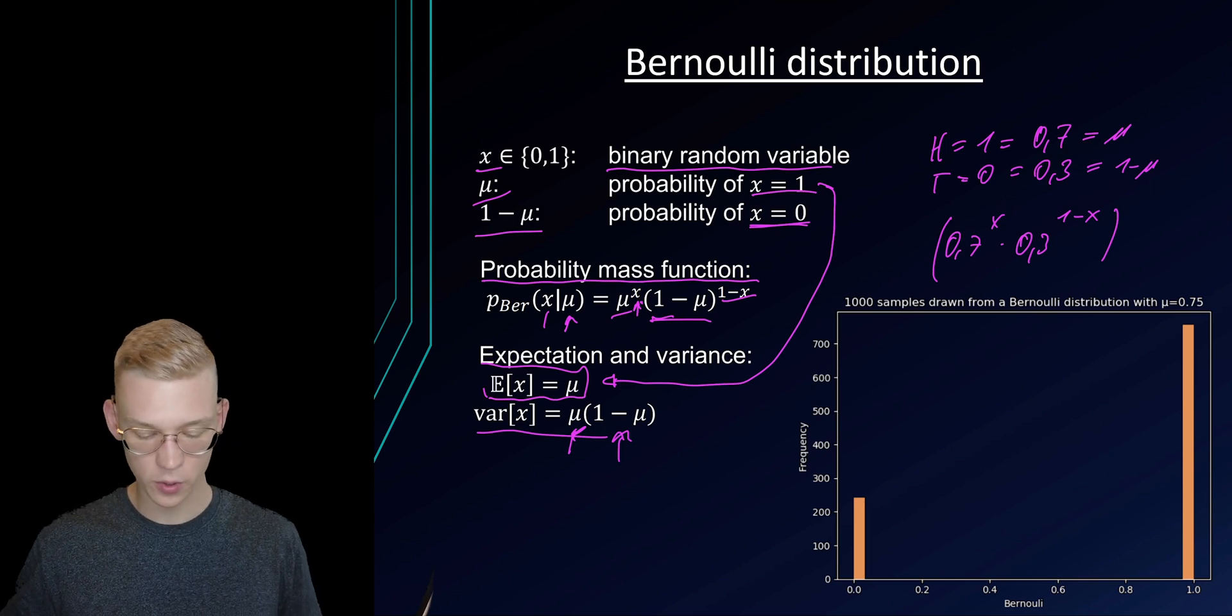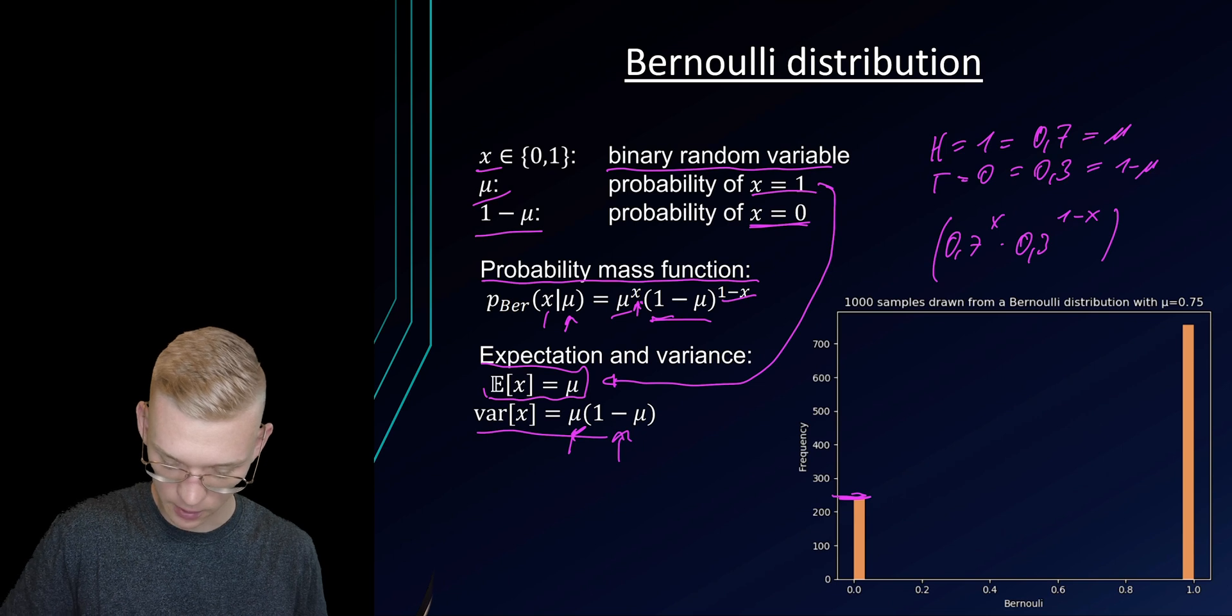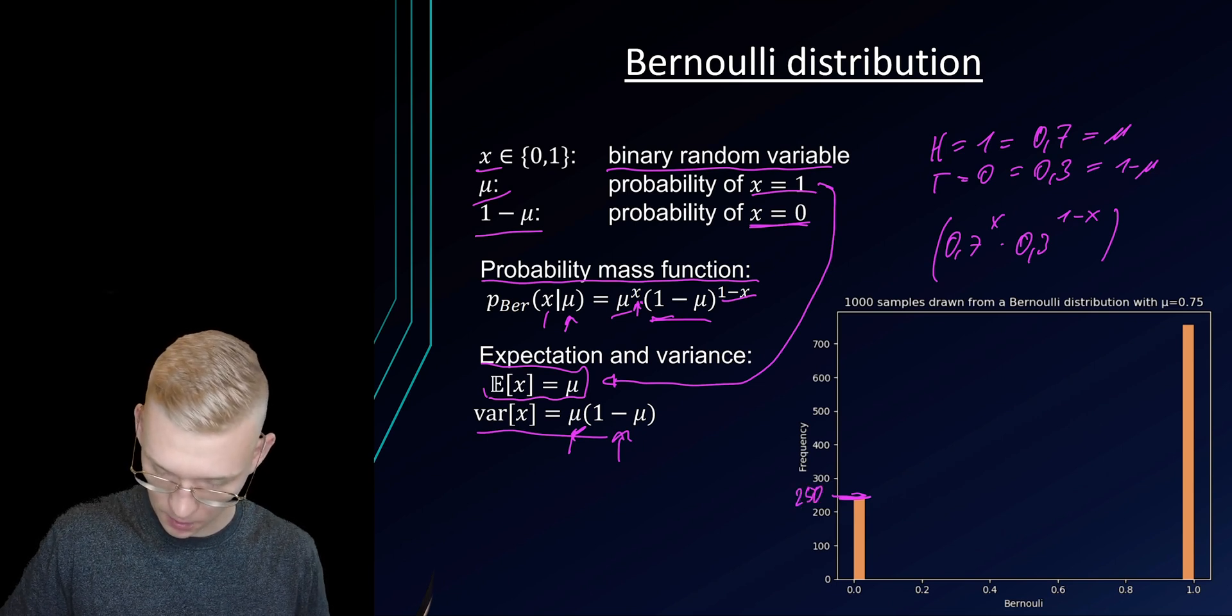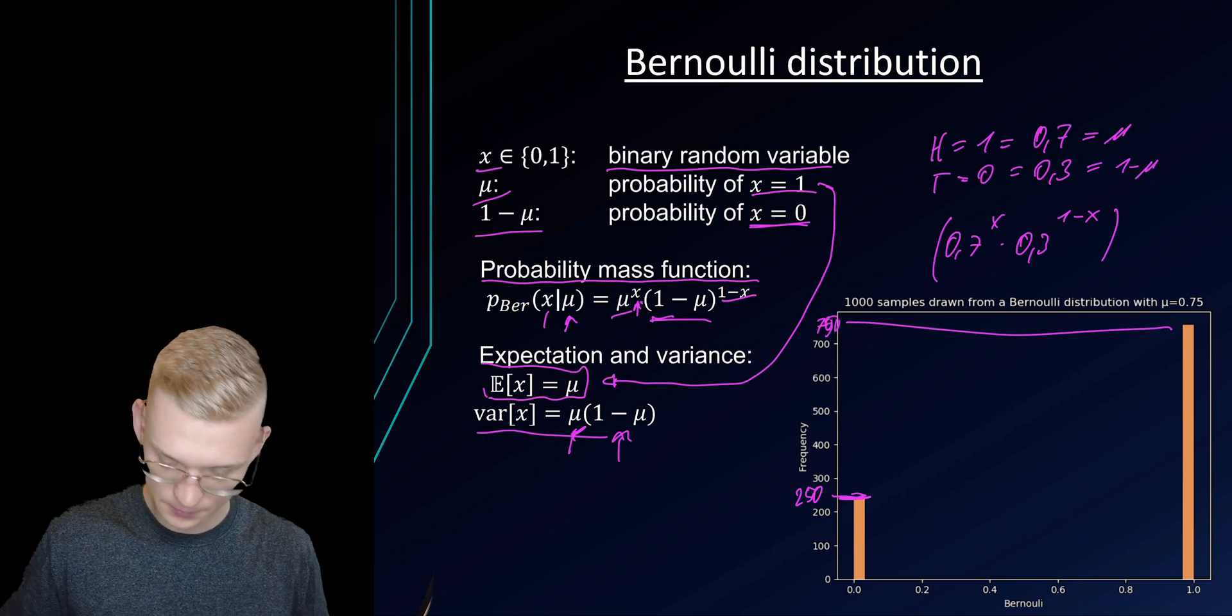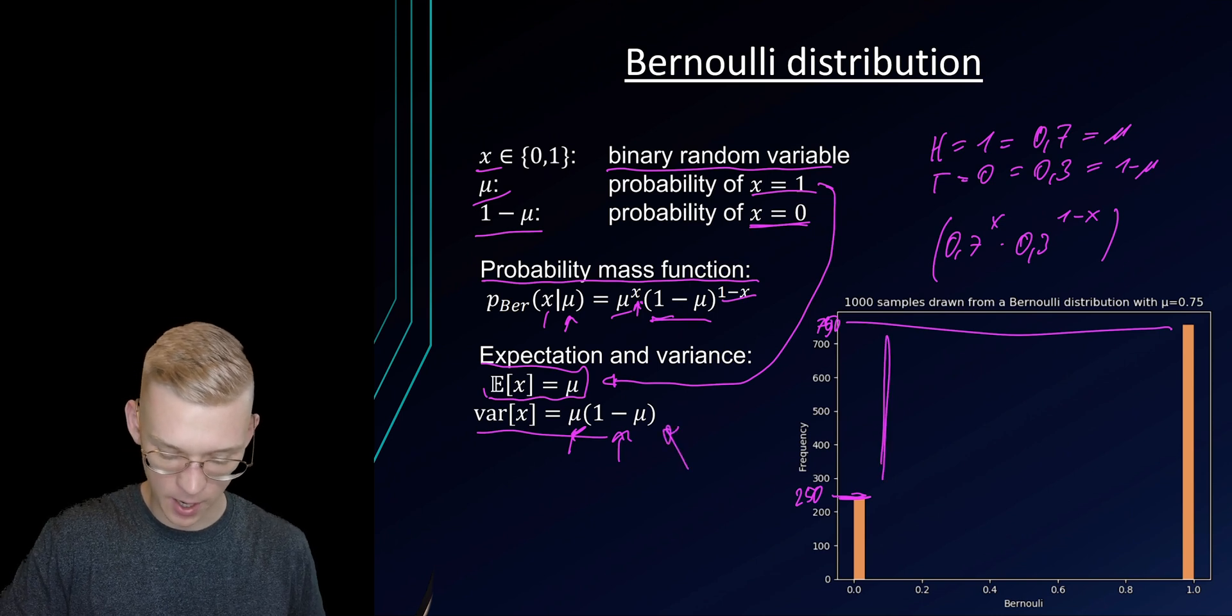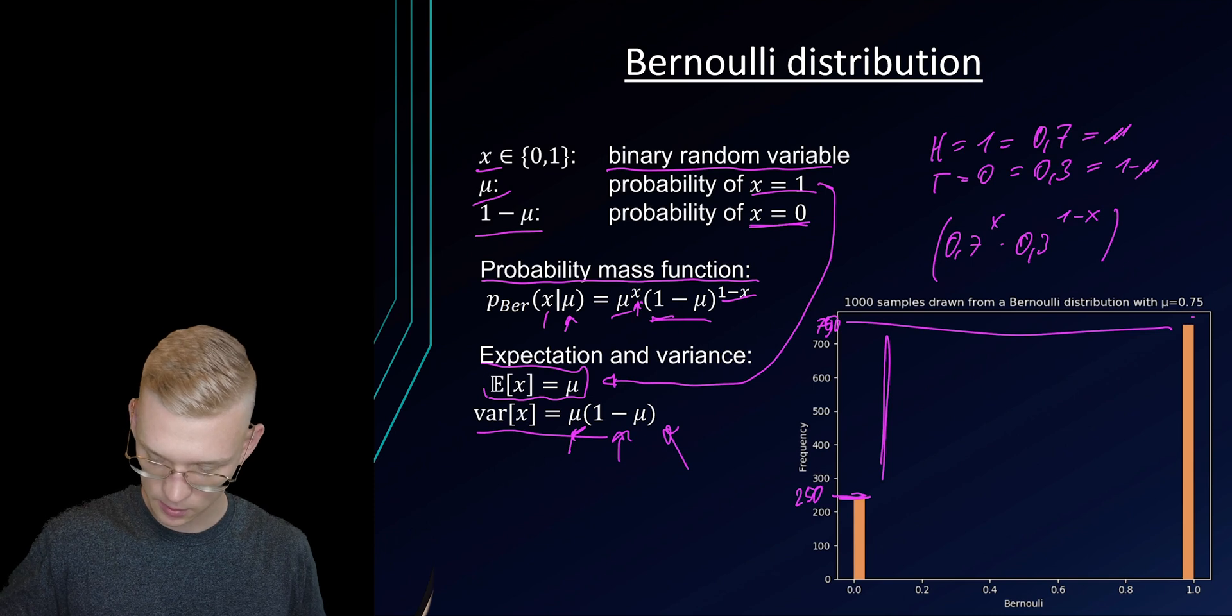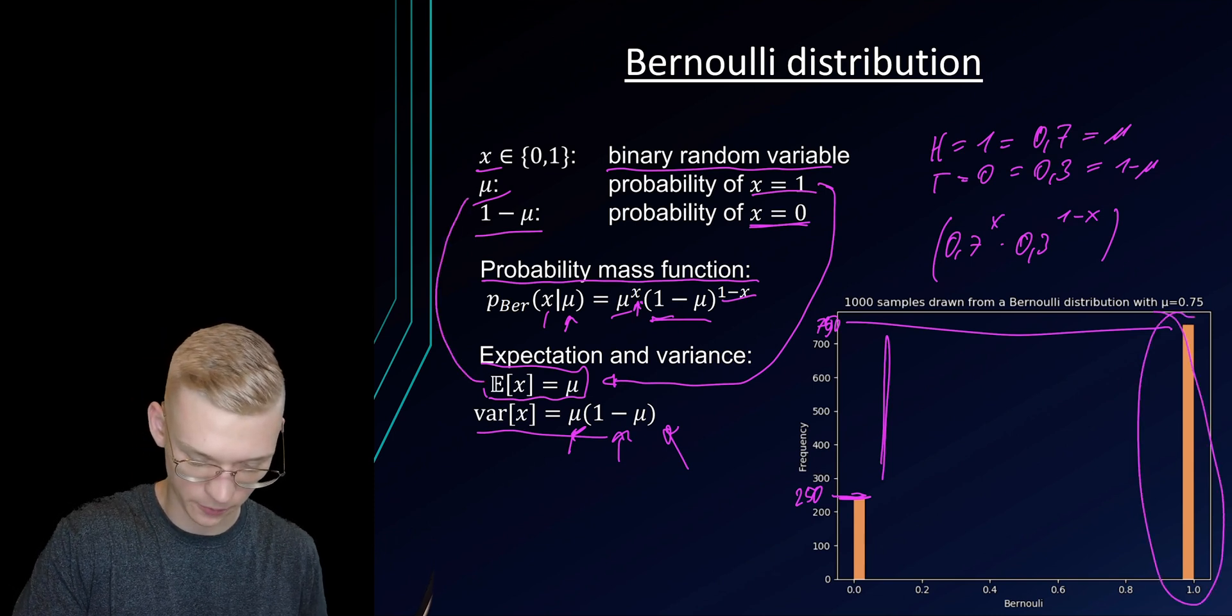So the more these differ, so for example here we have 250 and here we have 700, 750, the more these differ the higher we have the variance and the expected value is 1 because it's coming from here.